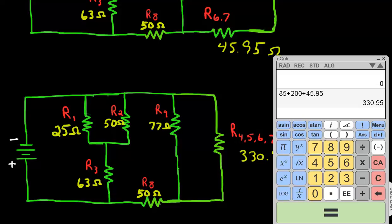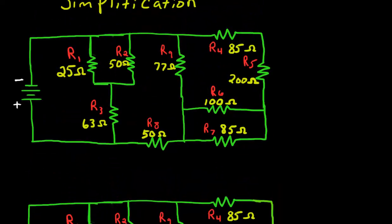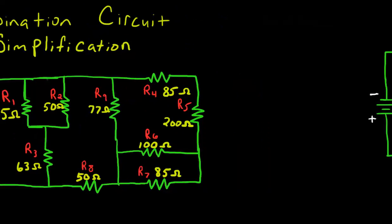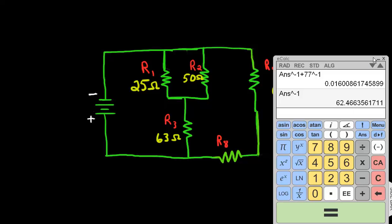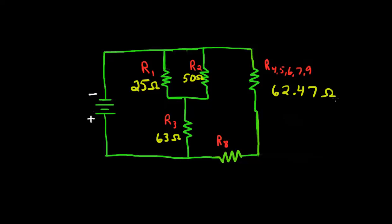So let's go ahead and calculate this value. We have the 330.95. Let's go ahead and take the reciprocal of that plus the 77 for R9, take the reciprocal of that, and of course the reciprocal of the answer equals 62.47 ohms. So 62.47 is our resistor value for our new equivalent resistance. So this is our new equivalent resistance value.